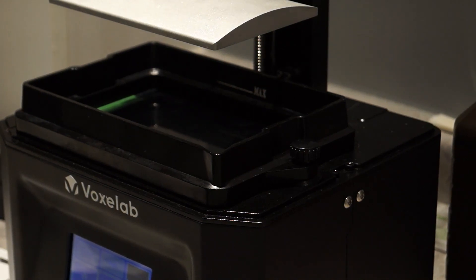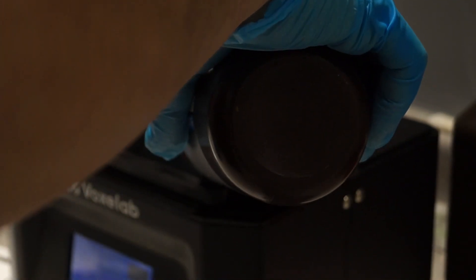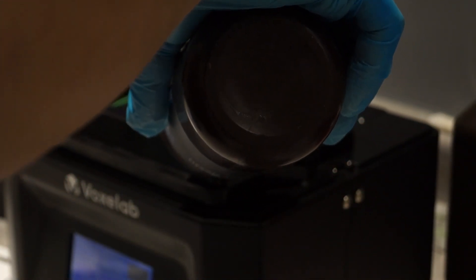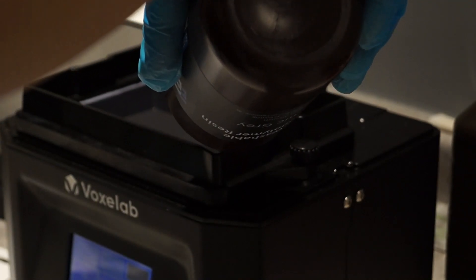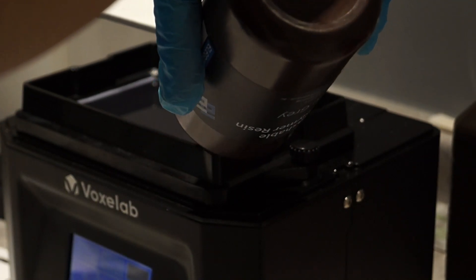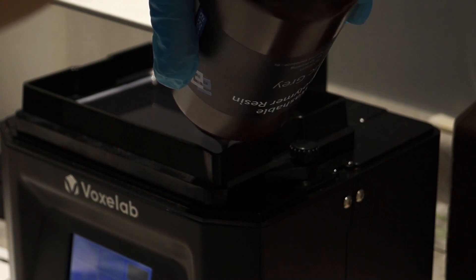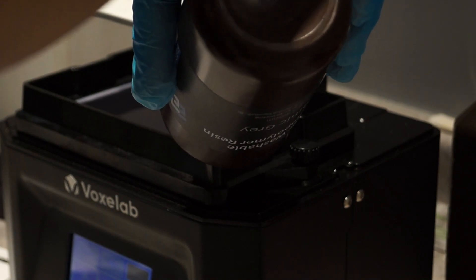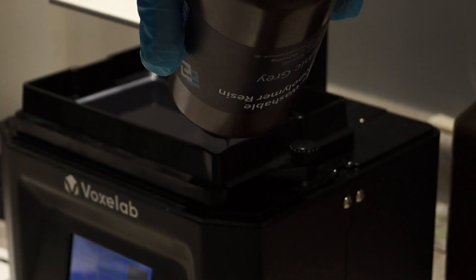The next part of this process is to add the resin to the vat. The vat on this printer is good because it gives you a max fill line. Sometimes you can overfill it and that's one thing you don't want to do. You want to make sure that you're using gloves as you can see me using them because the resin is quite nasty especially on skin.